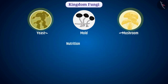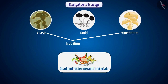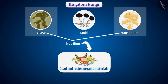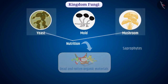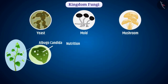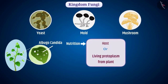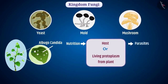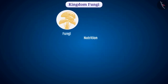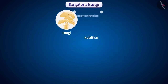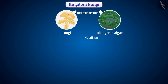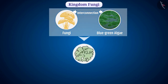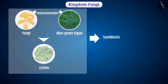Some fungi depend on dead and rotten organic materials for nutrition — these are called saprophytes. Some receive nutrition from living protoplasm of a host body, such as an animal or plant — these are called parasites. Some fungi form permanent interconnections with algae, such as blue-green algae, and higher-grade plants that aid in nourishing each other. Such fungi are called symbiotic or lichen, and such a relationship is called symbiosis.